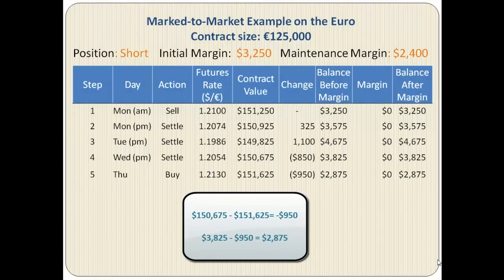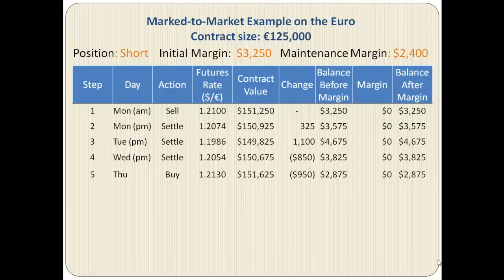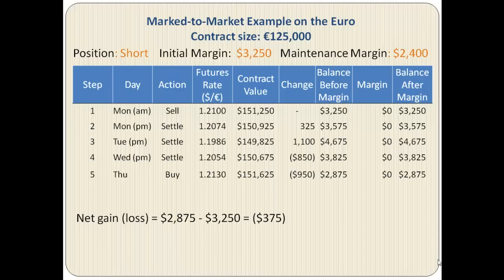On day 5 the seller buys back the contract — remember, otherwise the seller would have to deliver the actual currency, so in order to avoid that the seller is buying back the contract at 1.2130. This is a drop of $950 and the balance before margin is $2,875. The seller was expecting the euro to decline but it has gone up, so there is a net loss for the seller. The net loss is the ending balance of $2,875 minus the initial deposit, which is $375. Notice there was no margin call triggered for the seller because the seller's margin account never dropped below $2,400.